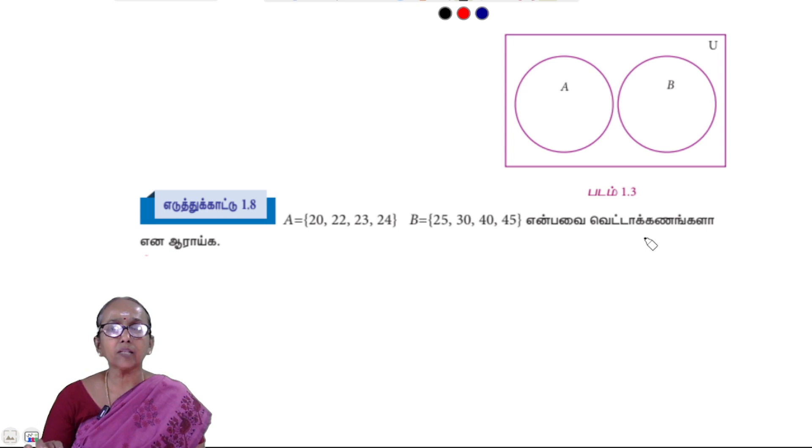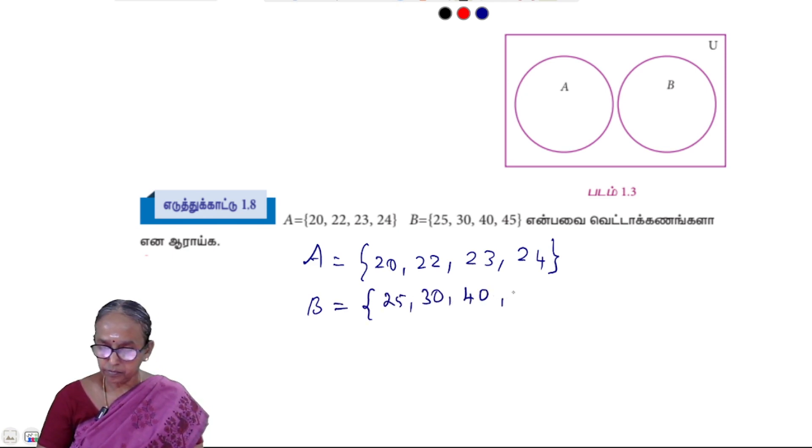The difference between the two sets. B is equal to 25.